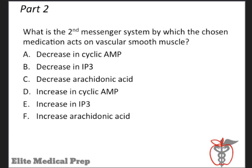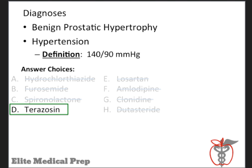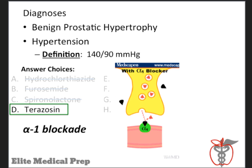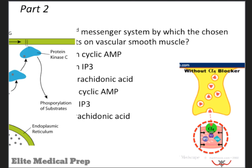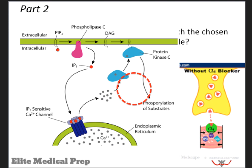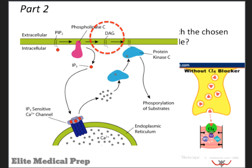Here's part two. It asks: what is the molecular mechanism or second messenger system by which the drug in part 1 exerts its effects on smooth muscle? We remember that terazosin treats BPH and hypertension. The mechanism of terazosin is alpha-1 blockade — it blocks alpha-1 receptors found on smooth muscle and blood vessels. For alpha-1 receptors, the second messenger system is the Gq protein that involves phospholipase cleaving membranes to give us IP3 and diacylglycerol (DAG).